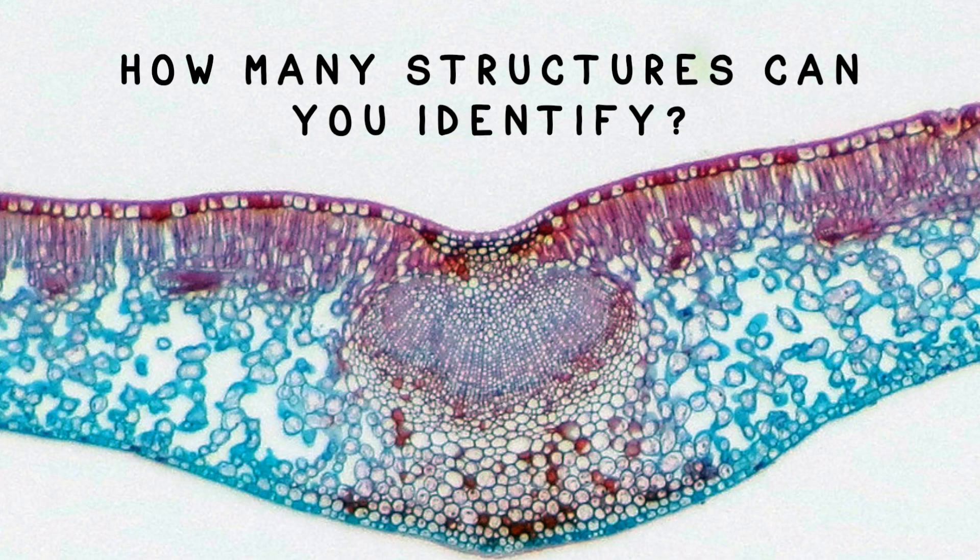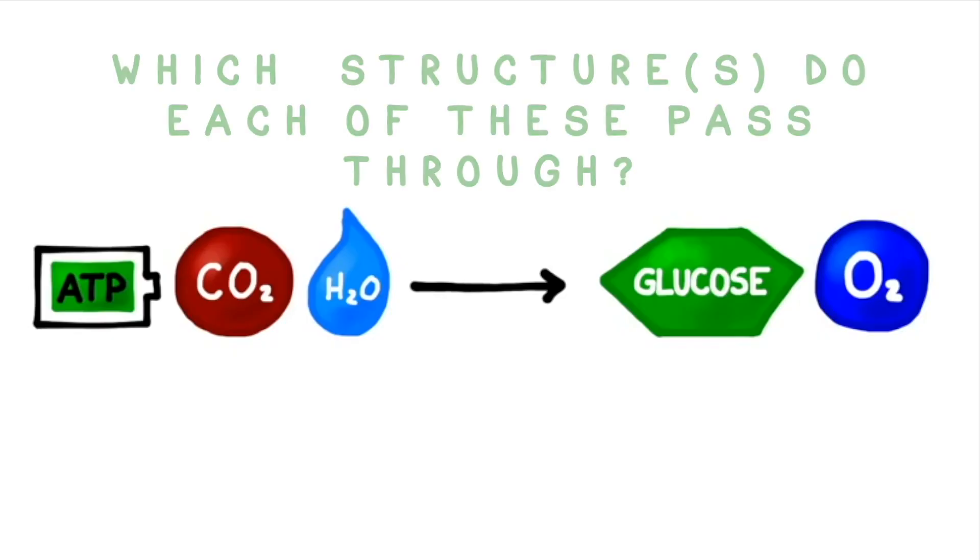To finish up, examine this microscopic cross-section of an actual dicot leaf and see how many structures you can identify. In addition, look at the reagents and products of photosynthesis and see if you can remember which structures are associated with each one.